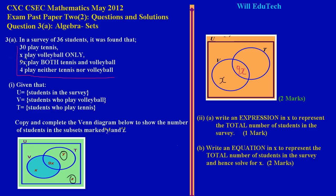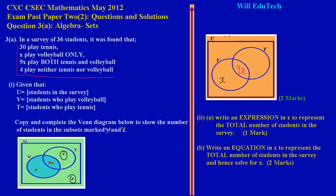We go back to the initial information and look for the number of students who played tennis. It stated 30 played tennis, so we write 30 in the tennis region for Y. Outside the circles we have our Z, and it's stated that 4 played neither tennis nor volleyball, so Z equals 4 — those are the persons who did not participate in the activities. The universal set U has a total of 36 students, so we put that figure at the top.